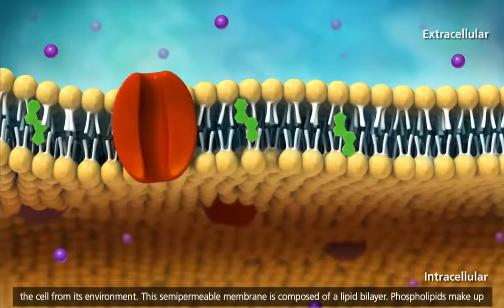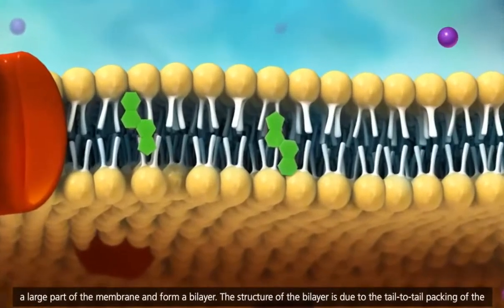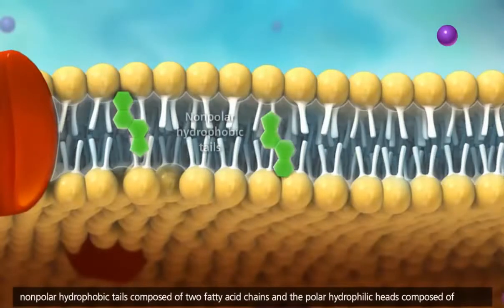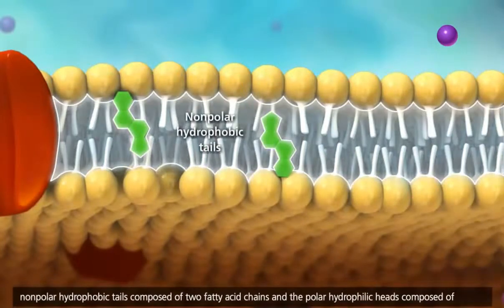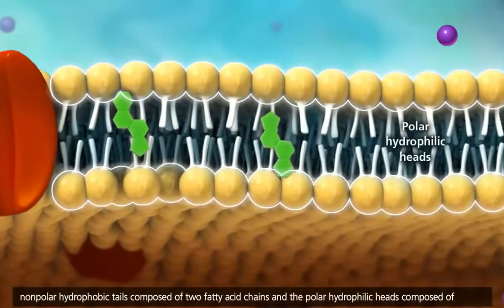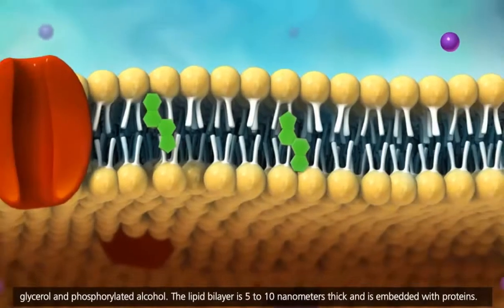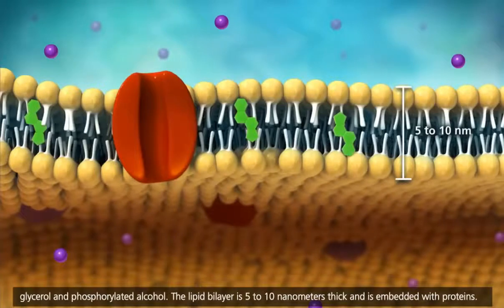This semi-permeable membrane is composed of a lipid bilayer. Phospholipids make up a large part of the membrane and form a bilayer. The structure of the bilayer is due to the tail-to-tail packing of the nonpolar hydrophobic tails, composed of two fatty acid chains, and the polar hydrophilic heads, composed of glycerol and phosphorylated alcohol. The lipid bilayer is 5 to 10 nanometers thick and is embedded with proteins.